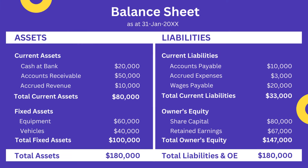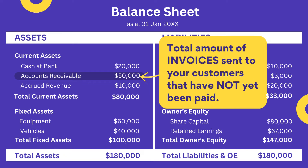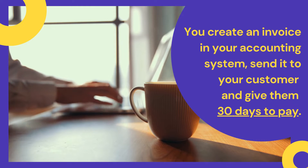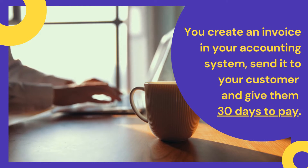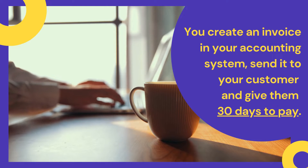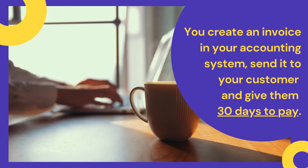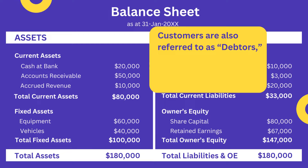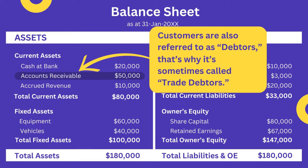She starts off by telling you that the $50,000 of Accounts Receivable is the total amount of invoices that have been sent to your customers but have not yet been paid. In your business, after you supply goods or services to a customer, you create an invoice in your accounting system, send it to your customer and give them 30 days to pay, so it's normal for there to be some unpaid invoices in the system at any given time. She also tells you that customers are sometimes referred to as debtors, and that's why Accounts Receivable is sometimes called trade debtors on the balance sheet.